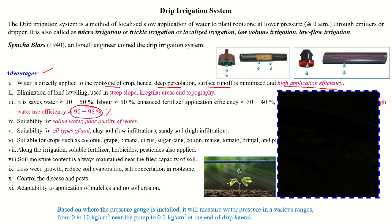The application efficiency may be up to 90 to 95 percent. It can also be used, like the sprinkler irrigation system, on steep slopes, irregular areas, or topographic areas. The system can save water up to 30 to 50 percent and labor up to 50 percent. It also enhances fertilizer application efficiency by 30 to 40 percent. It is well suitable for saline water or poor quality water, and suitable for all soil types, whereas sprinkler is suitable only for sandy soil and not for clay soil.